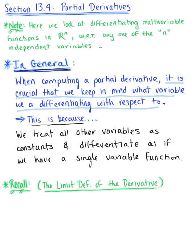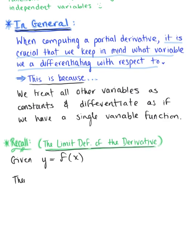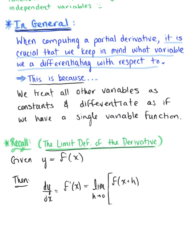To help us prepare for the definition of partial derivatives of a function of two variables, let's take a quick minute to recall the limit definition of the derivative. Suppose we are given a single variable function y = f(x) — think back to Calc 1. Then we know that the derivative dy/dx, or f′(x), is equal to the limit as h approaches 0 of the difference quotient: f(x + h) minus f(x), all divided by h.